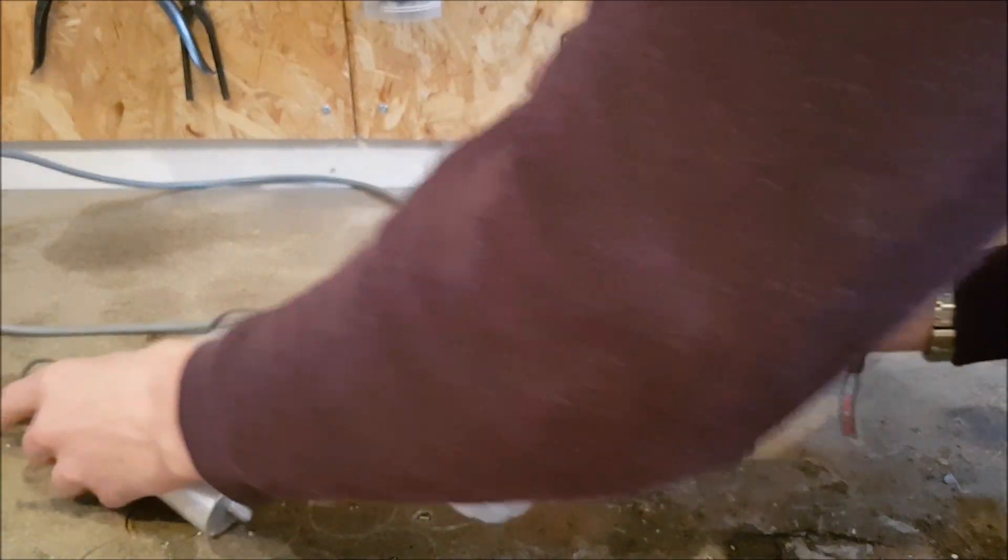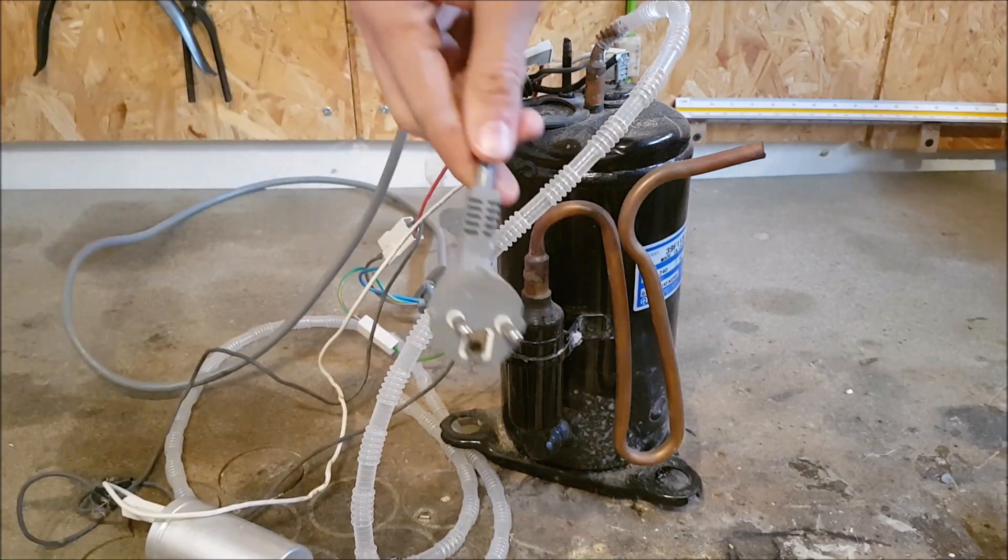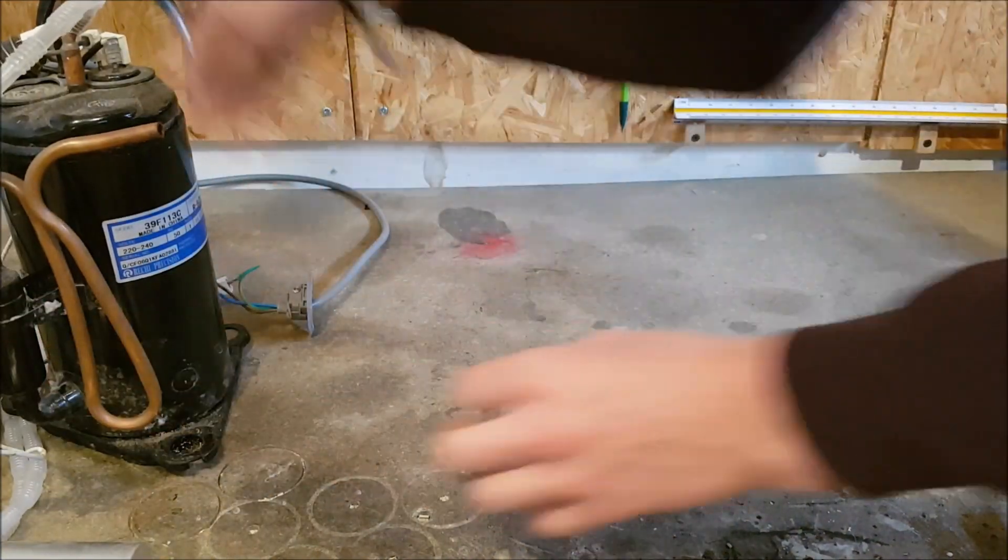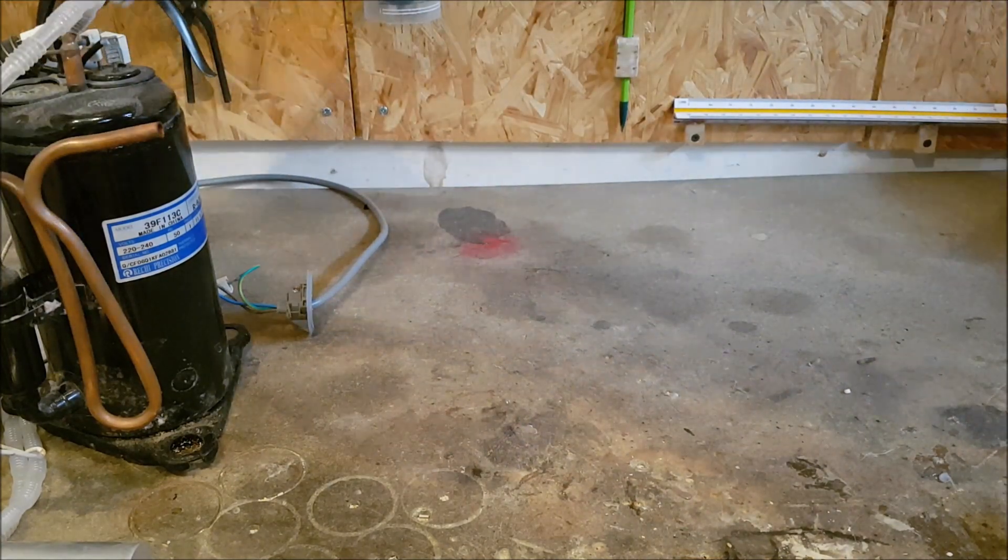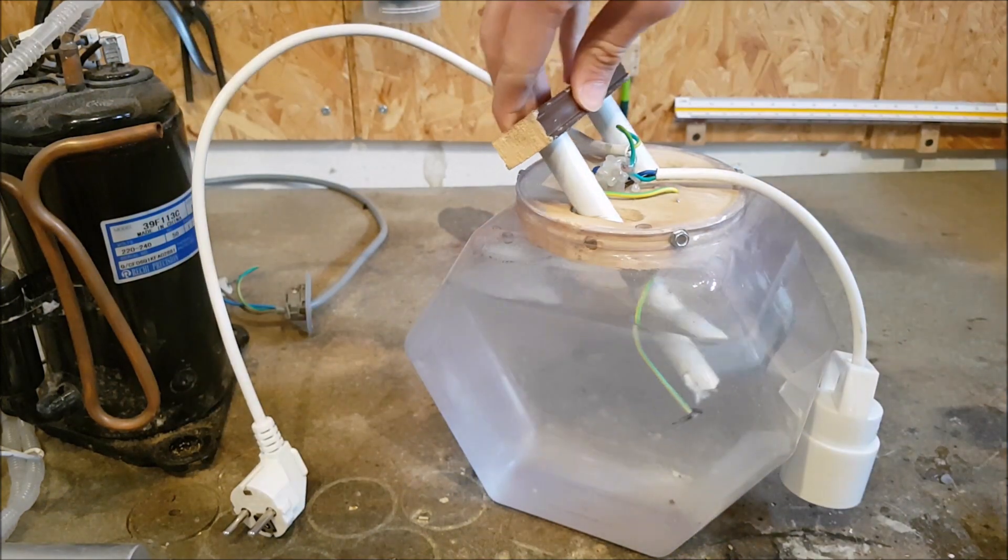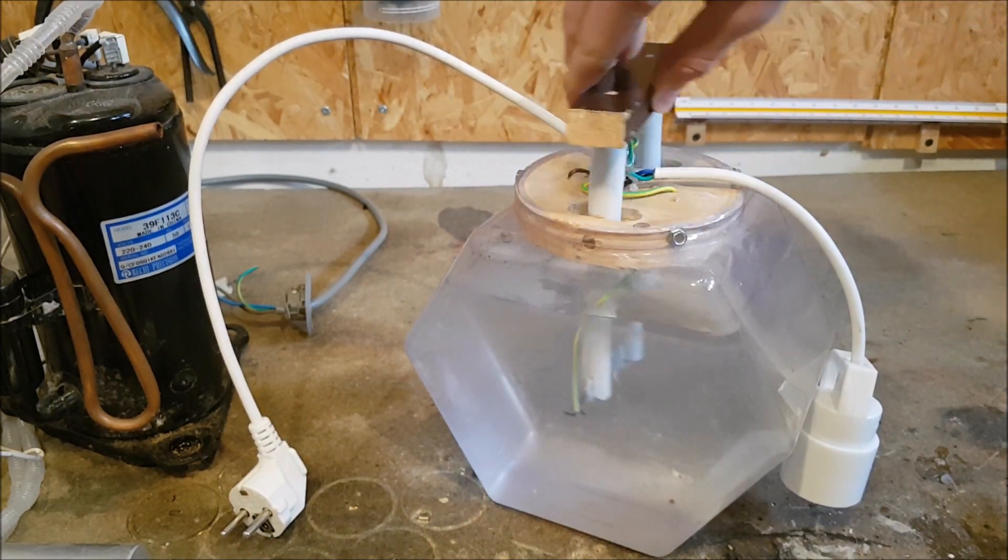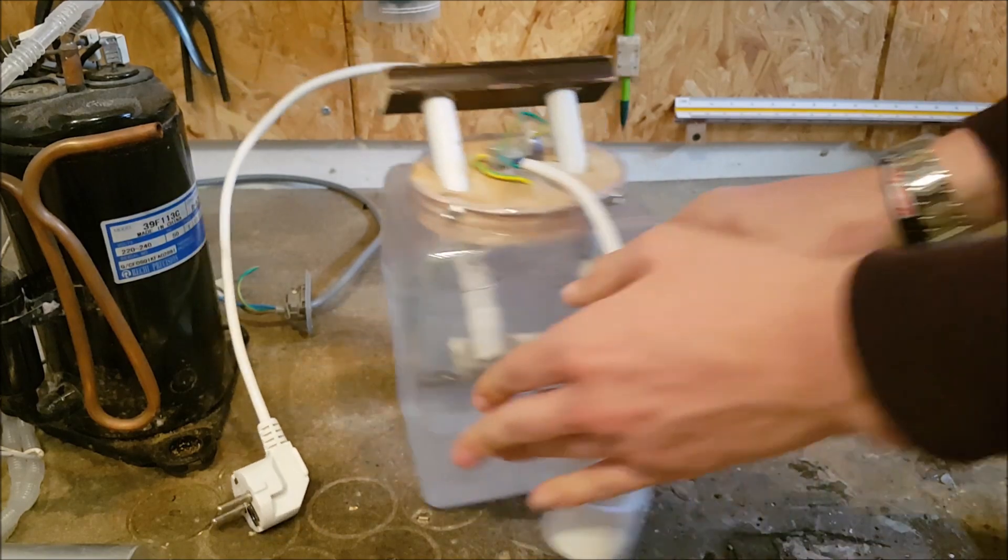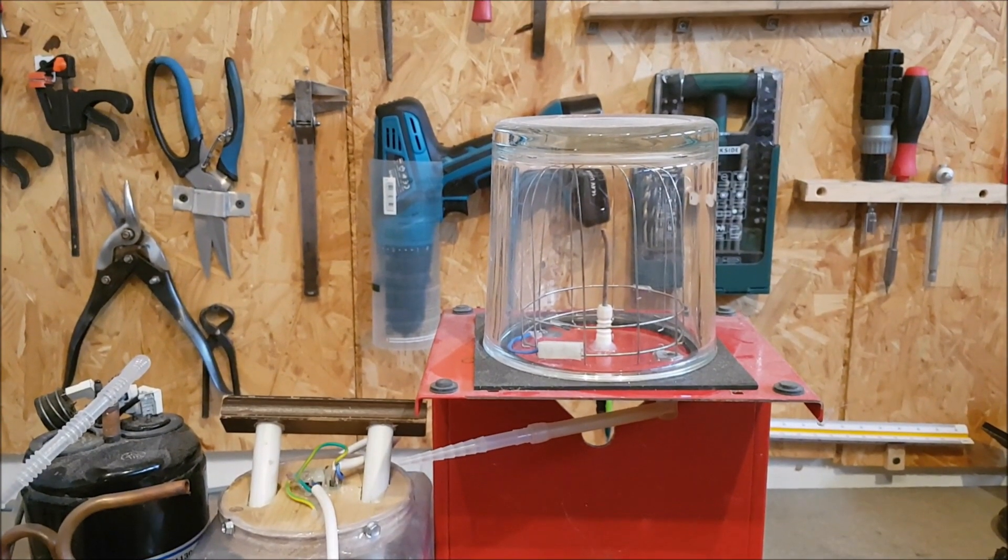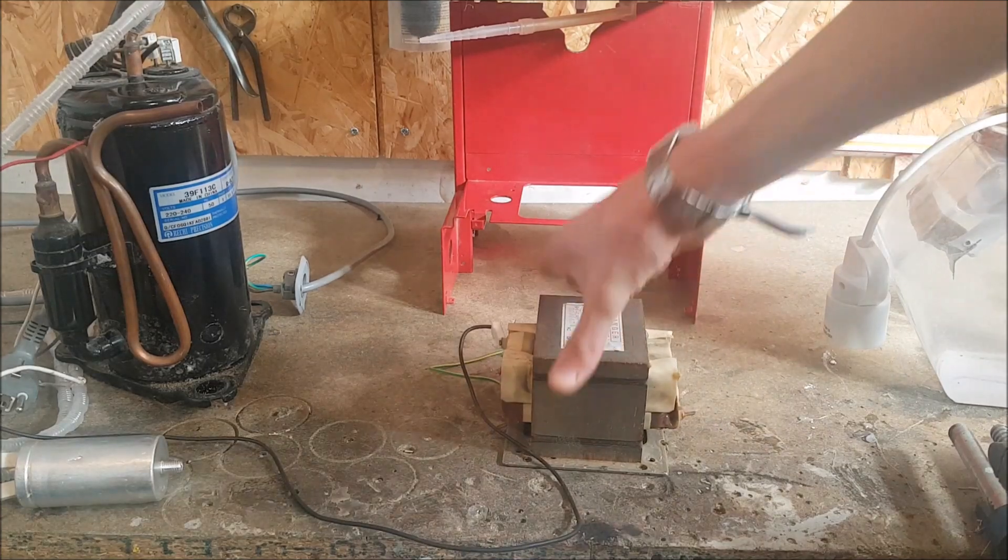To sum up, the equipment you're going to need to run this experiment is a fridge compressor which also works as a vacuum pump, a high voltage variac—in my case a scare-iac that I show you how to build in another video. This will enable you to increase the voltage slowly, along with the vacuum chamber and a microwave oven transformer.